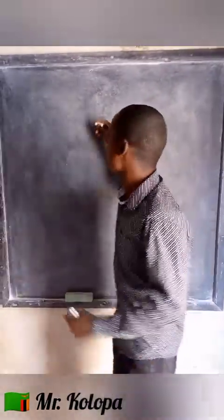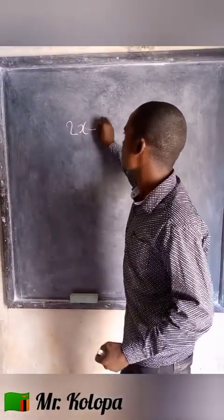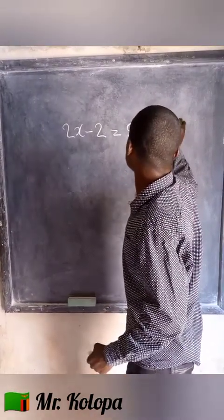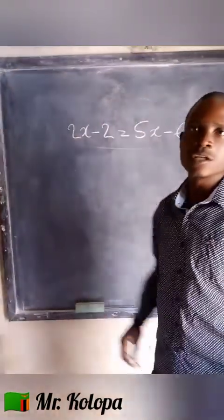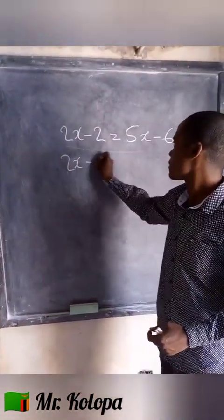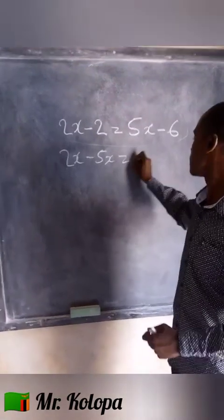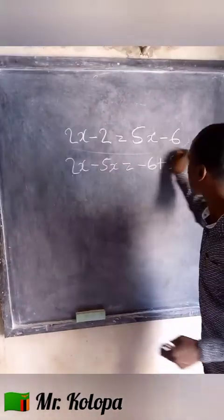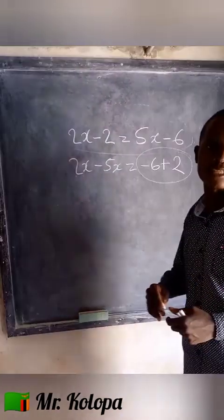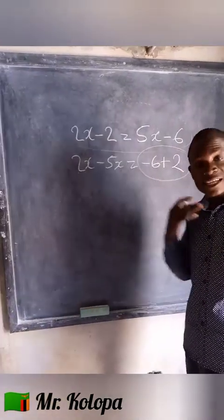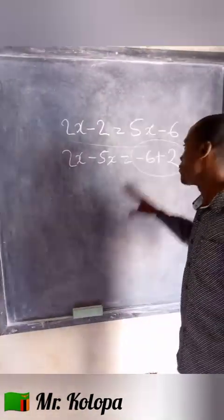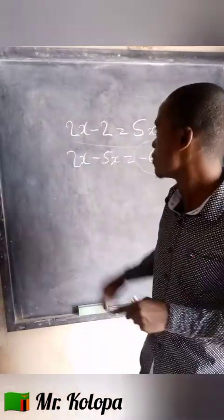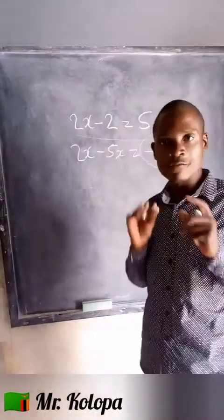For example, if a question comes to say, solve the equation, if you are to solve this equation, you are supposed to collect the like terms. Once you collect the like terms, you will find that what we are having here are integers. Someone should understand these integers before we start teaching equations, and this is the reason why we are going to start with integers, because integers are very important.